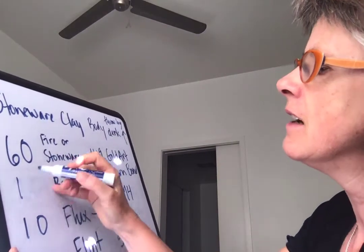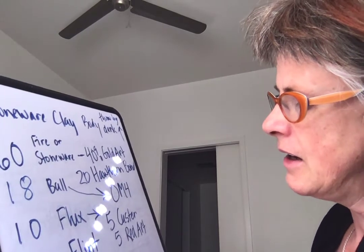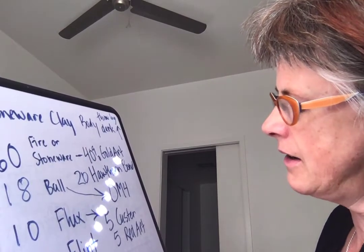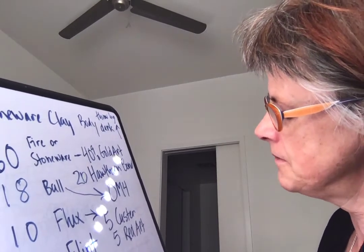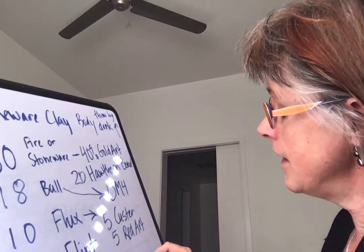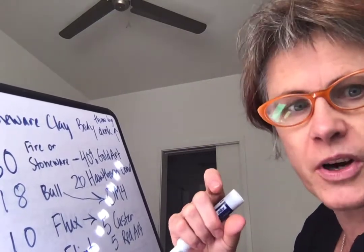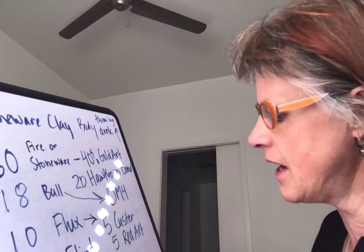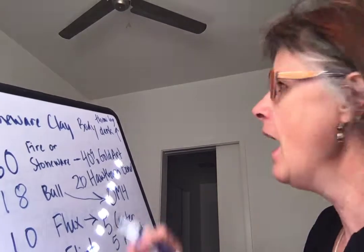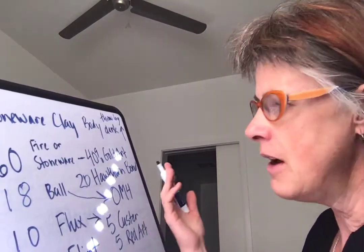Grog comes in many different particle sizes — we probably have five or six or more different versions. Some are pretty fine and some are really rough and coarse, almost coarser than play sand. I think I'll adjust my recipe: go down to 18% ball clay and add 2% of a 60-mesh grog, which is kind of in the middle — the mesh of our grogs goes down to 20-mesh, which is very large particle, or up to 120-mesh. Now I have a recipe I could go make in the lab and see if I like it.